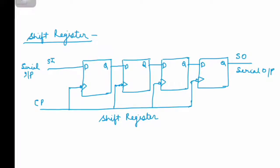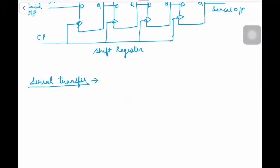Whenever there is an input present at the serial input, when the clock is triggered or the next clock pulse comes, whatever information is present at the serial input will just reflect here. Our digital system is set to operate in a serial mode when information is transferred and manipulated one bit at a time.